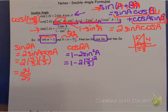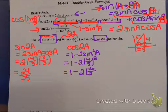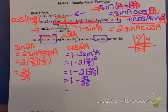So I have 1 minus 2 times 4/5 squared - my sine value - which will get squared from the identity. Following PEMDAS: first square the fraction, giving 16/25; then double it, giving 32/25. Then remember 1 is 25/25, so subtracting gives negative 7 over 25.